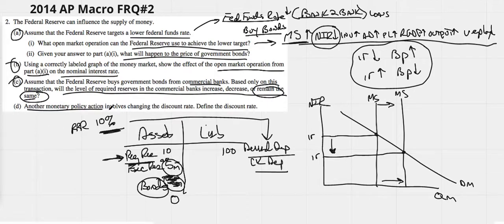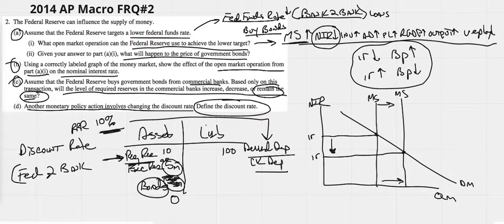Another monetary policy action involves changing the discount rate. Define the discount rate. Now, the discount rate is one of the three tools of the Fed. The discount rate is just what we call Fed to bank loans. If a bank needs a loan, it can go to the Fed and borrow at the discount rate. They don't tend to like to do it.